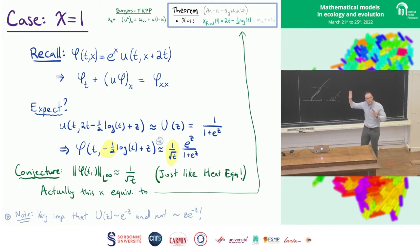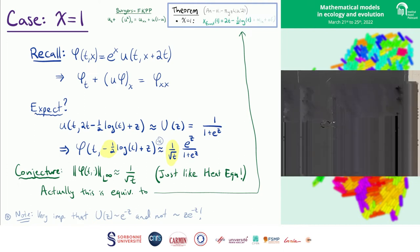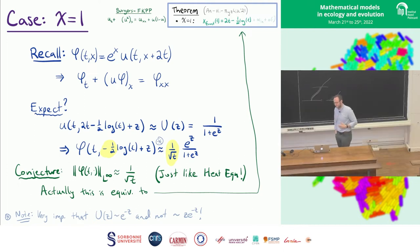So what should you expect? Heuristically, why should you get this 1 half log t? So suppose you actually do converge to the traveling wave. If you do converge to the traveling wave, then phi, you can just kind of compute explicitly using these formulas up here, and you get 1 over root t e to the z over 1 plus e to z. This thing essentially has an infinity norm of 1 over root t, and that tells you that somehow this 1 half log t is equivalent to getting this 1 over root t decay.